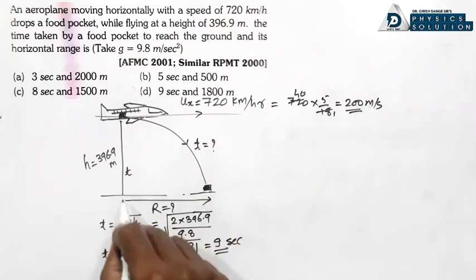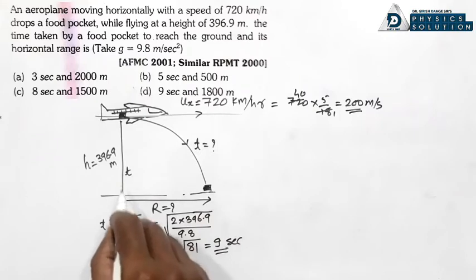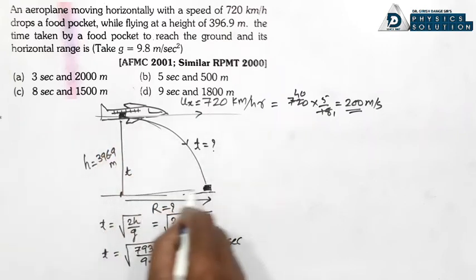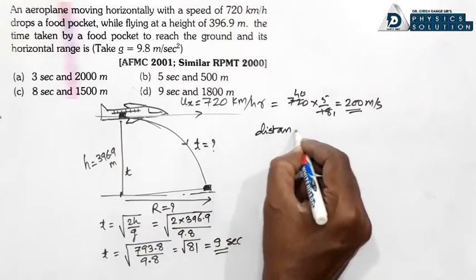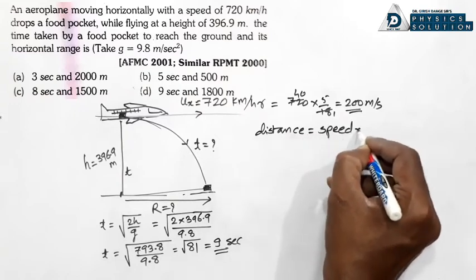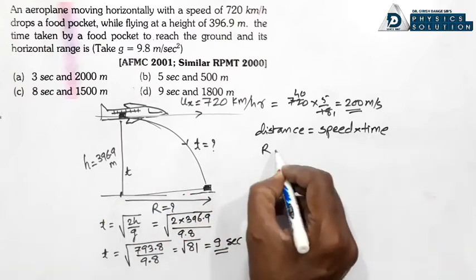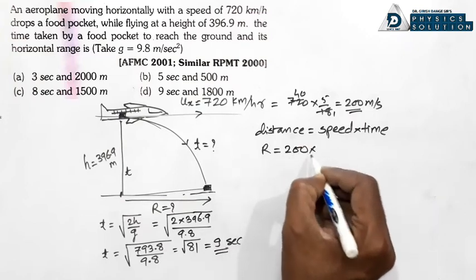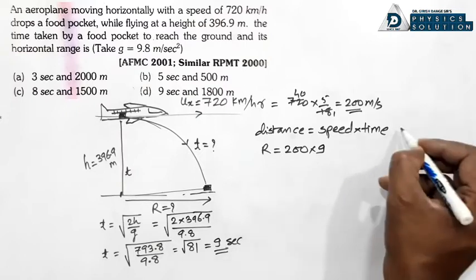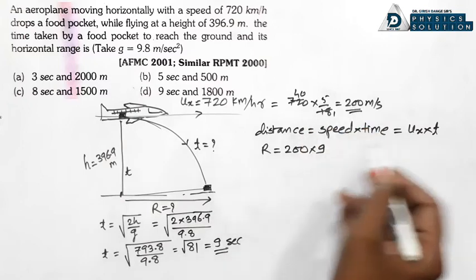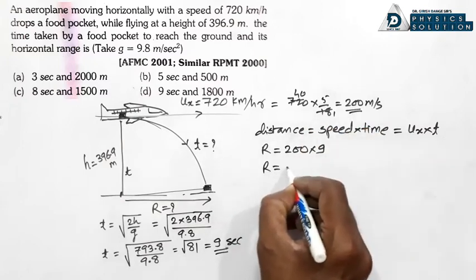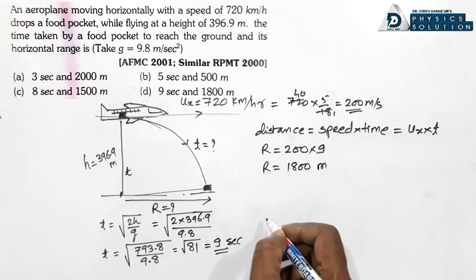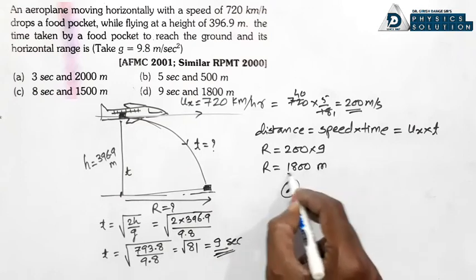Speed pata hai — 200 metre per second. Toh range = UX × t = 200 × 9 = 1800 metre. Matlab option hoga: 9 seconds aur 1800 metre.